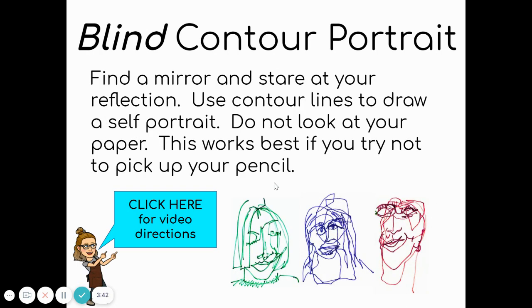Another option is a blind contour portrait. Find a mirror and stare at your reflection. A blind contour drawing means you're not looking at your paper — you stare in the mirror and draw what you see of your face without looking down. It helps if you don't pick up your pencil from the paper; just keep it down the whole time and focus on the curves of your face. This is also fun to do of a friend, sibling, or someone in your house.